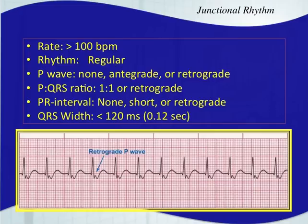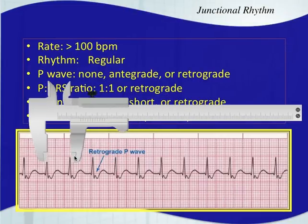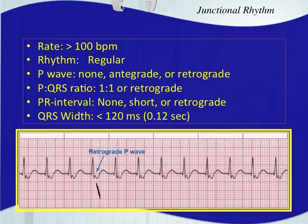With junctional tachycardia, the rhythm will also be regular. Map these out with your calipers and you'll see the rhythm is pretty regular. It has the same rules as other junctional rhythms — the P wave could be antegrade, buried within the QRS, or retrograde. The P-to-QRS ratio shows only one P wave per QRS complex if visible. The PR interval will either not exist, be very short, or the P wave will come after the QRS complex. The QRS width should be narrow, less than three small boxes, which is 0.12 seconds or 120 milliseconds.